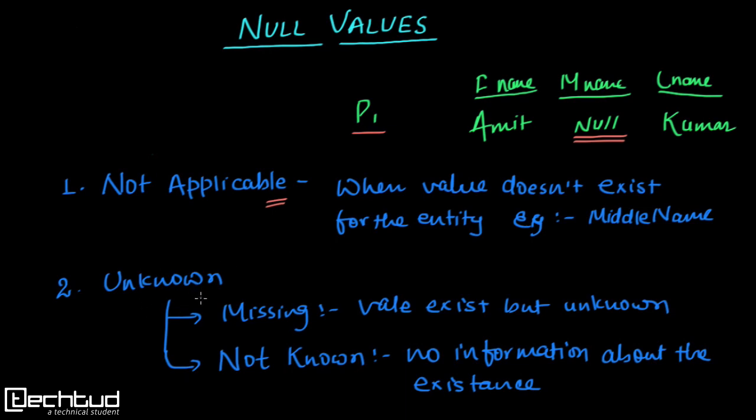The next is unknown, that is, the value is missing. Let's say I am storing a database of my friends, and for a friend, I don't remember his middle name. I just used to call him by his first name or last name. In that case, it will come under the missing condition. That is, middle name exists but I don't remember. It is unknown.